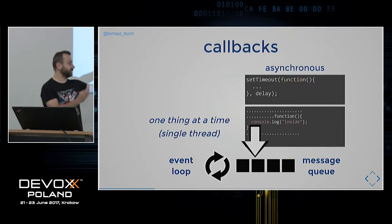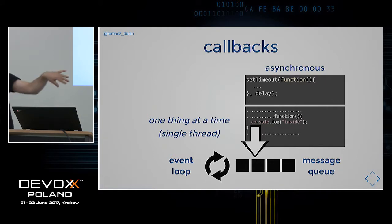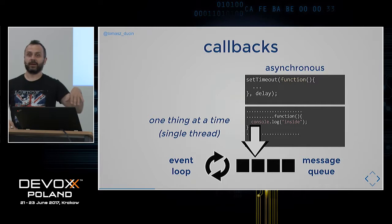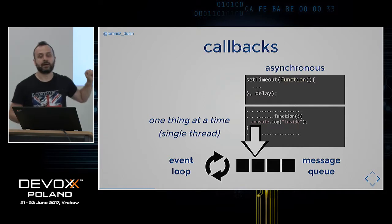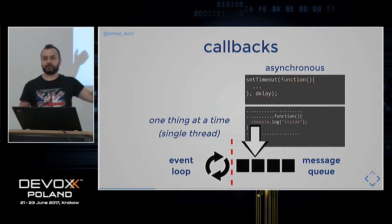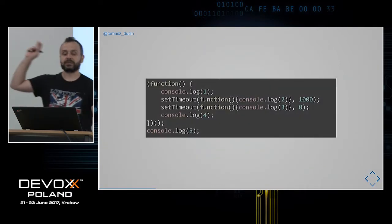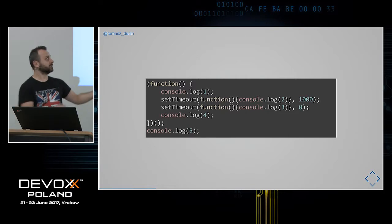The event loop handles one message at a time — it takes a message, processes it, throws it away, then gets the next one. This message queue model is a simplification; in reality there are many more queues and it can be more complex. The event loop and message queue are separate things. Given a code snippet with an IIFE and mixed sync/async calls, the question is: what is the order of console.log outputs?